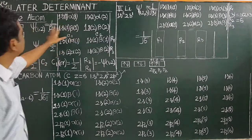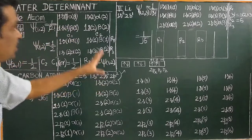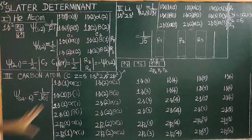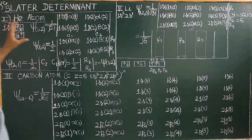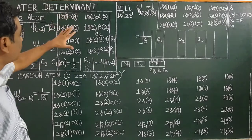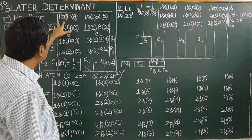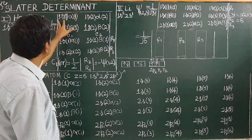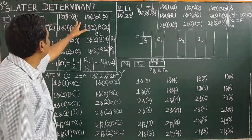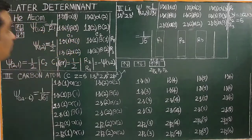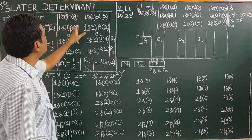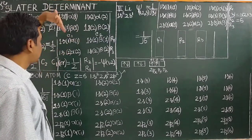This is the wave function expressed in Slater determinant form. It includes both the spatial wave function, where alpha and beta are spin wave functions — alpha for upward spin and beta for downward spin.